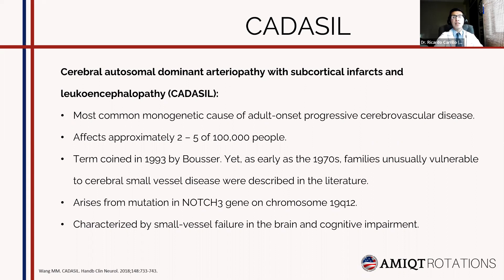This term is kind of recent. It was coined in 1993 by Bowser and Jett, but as early as the 1970s, families who presented with unusual clinical presentations of cerebral small vessel disease were described in the literature. The cause of this disease is a mutation in the NOTCH3 gene on chromosome 19. It is characterized by small vessel failure in the brain and cognitive impairment.